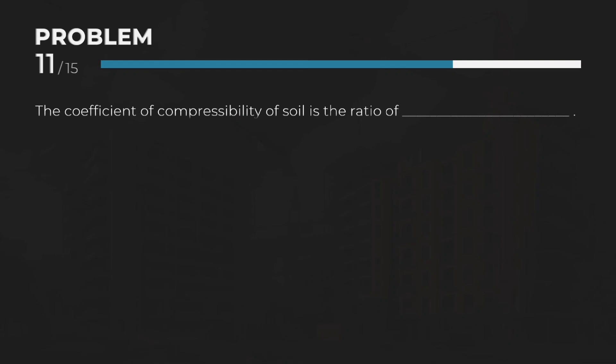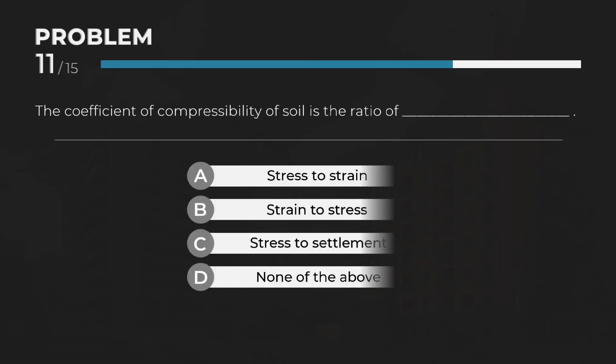The coefficient of compressibility of soil is the ratio of — Answer: B. Strain to stress.